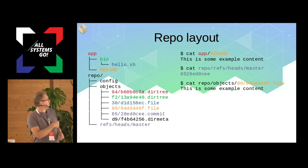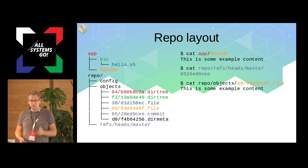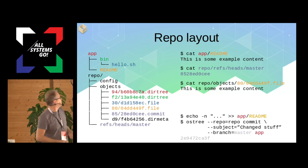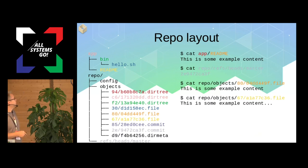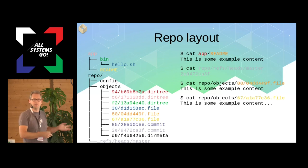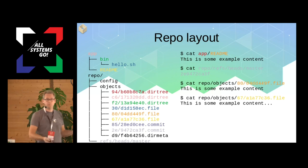If you store two files in the same repository with the same content but different permissions, they will be two separate objects in the object store. When we modify a file — say we change the readme — and commit again, the master ref points to a new root commit object, which points to the previous commit plus the new root directory and the new version of the changed file. All unchanged objects are left alone. You can find both versions of all objects in the store.